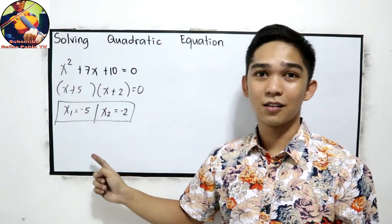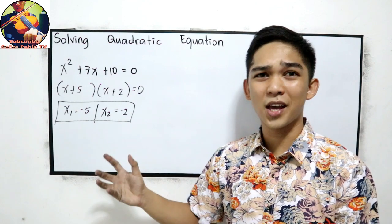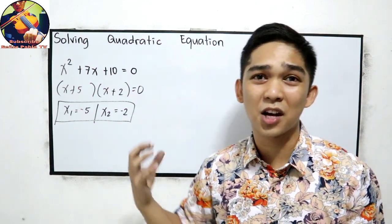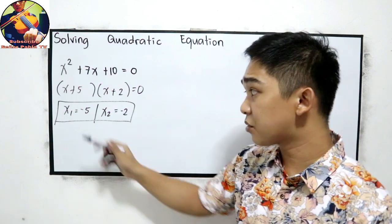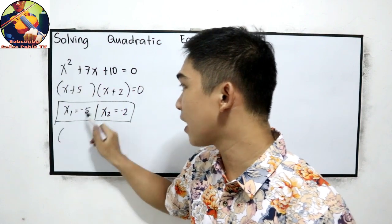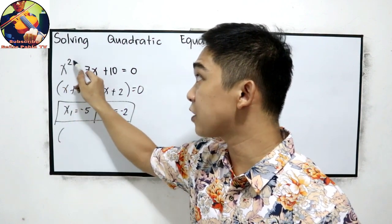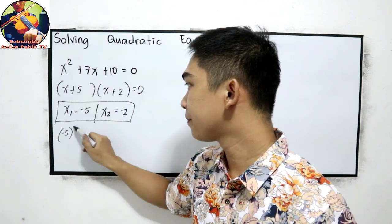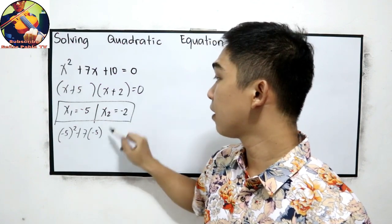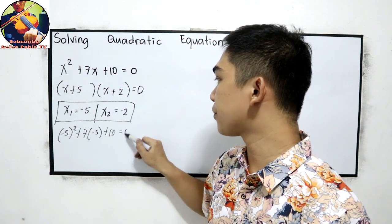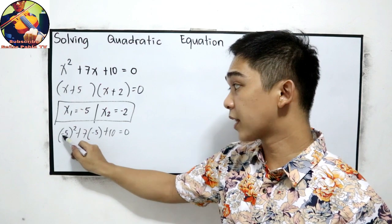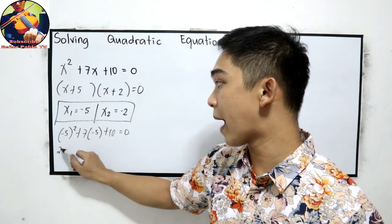To check — someone asked in the comments how to verify the answer. All you need to do is substitute the value of x. Let's use negative 5: negative 5 squared plus 7 times negative 5 plus 10 must equal 0. Negative 5 squared is positive 25.